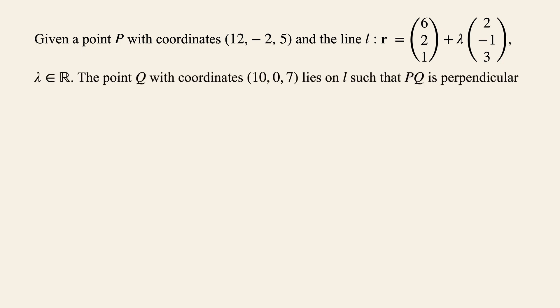the point Q with coordinates (10, 0, 7) lies on L, such that PQ is perpendicular to L. Now find the position vector of the reflection of P in L.